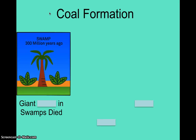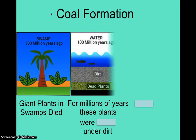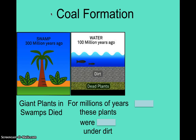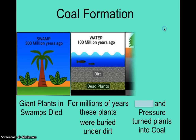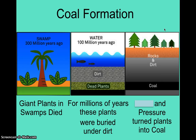300 million years ago in swamps, giant plants died. Normally when plants die, decomposition would occur, but somehow this did not happen. And plants for millions of years were buried under dirt. You can see in the diagram a layer of dead plants buried under dirt. Over time, that dead plant material was subjected to high heat and pressure, and this is how coal formed.